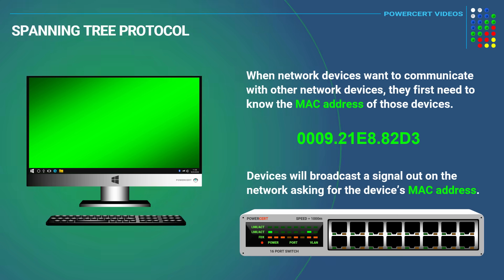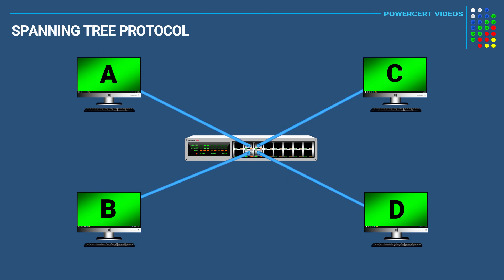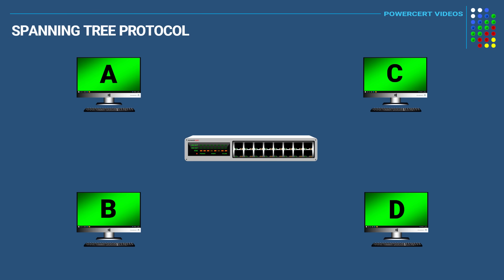Once the MAC address is known, communication can take place. For example, if computer A wanted to communicate with another computer on this network, it'll send out a unit of data called a broadcast frame. And once the broadcast reaches the switch, the switch will forward that broadcast to every device connected to it. In a typical network, you would have a switch with computers connected to it forming a local area network.